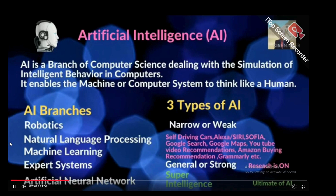AI branches include: Robotics, Natural Language Processing (NLP), Machine Learning (ML), Expert Systems, and Artificial Neural Networks.